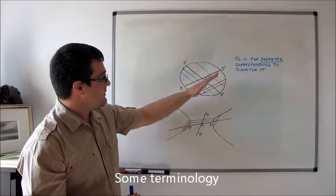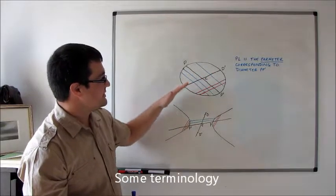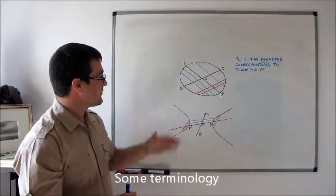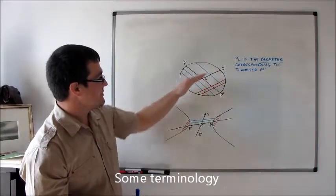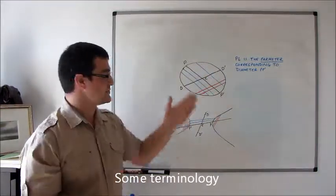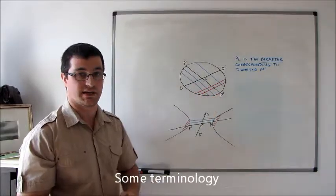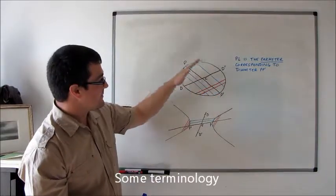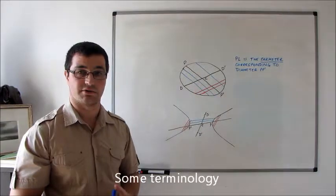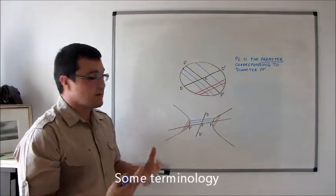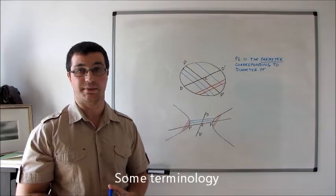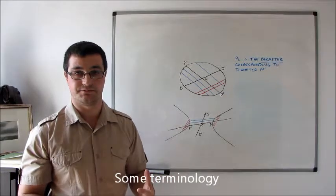There is a very close relationship between DD' and PP': DD' bisects all chords parallel to PP', the transverse diameter, and PP' bisects all chords parallel to DD'. So we call DD' the conjugate diameter to PP'.